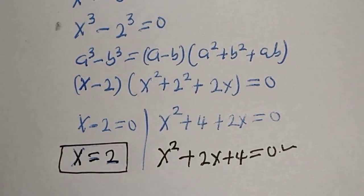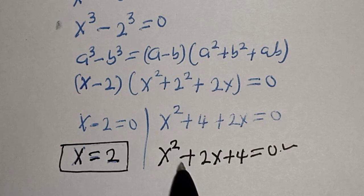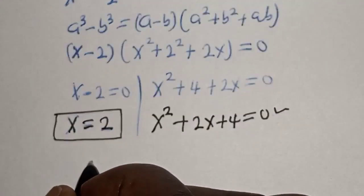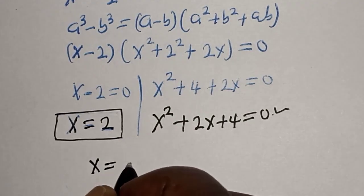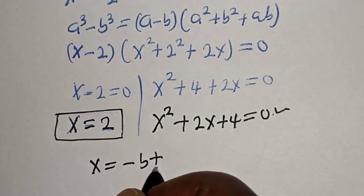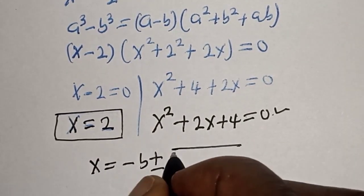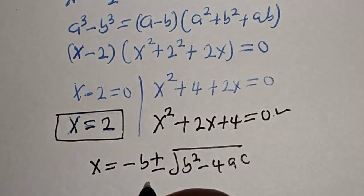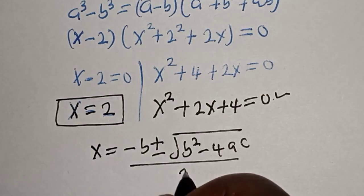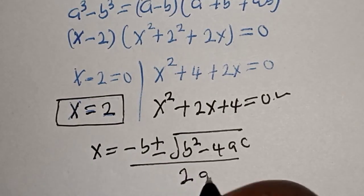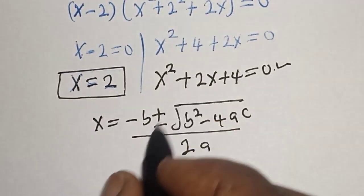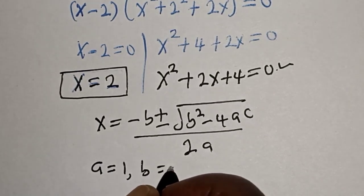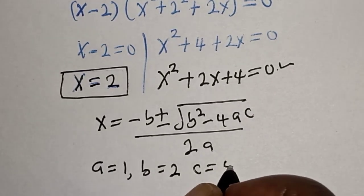This is a quadratic equation which can be solved using the quadratic general formula. The quadratic general formula gives us s is equal to minus b plus or minus square root of b squared minus 4ac, divided by 2a. From this equation, a is equal to 1, b is equal to 2, and c is equal to 4.